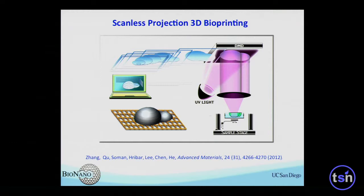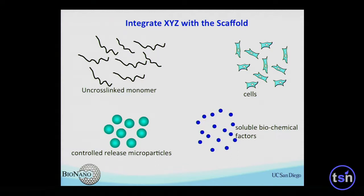Most recently, we looked at the capability of really pushing the throughput. Instead of doing one laser beam at a time, we're using a so-called digital micromirror array — the same technology you see in computer projectors. It can project millions of light spots down to the surface, so we can do truly parallel processing without point-by-point scanning. That's really our unique contribution in terms of throughput.